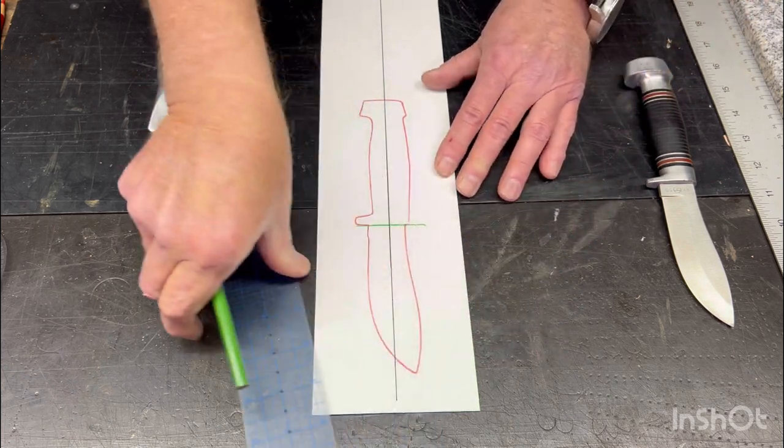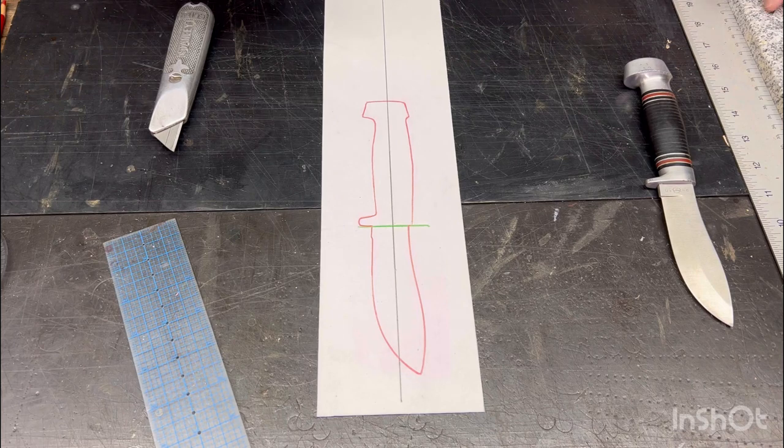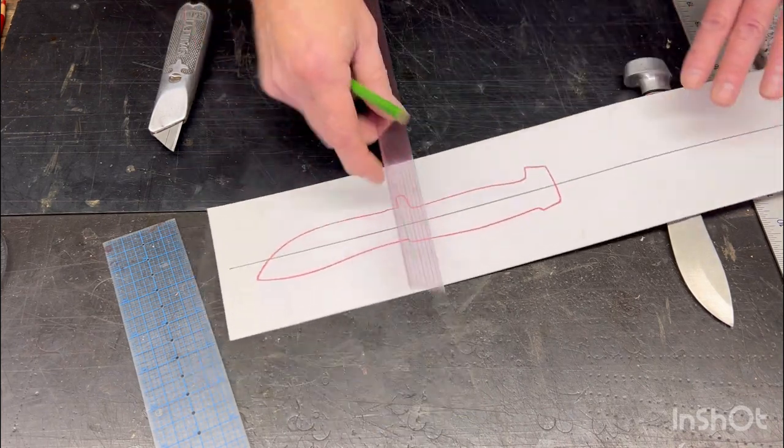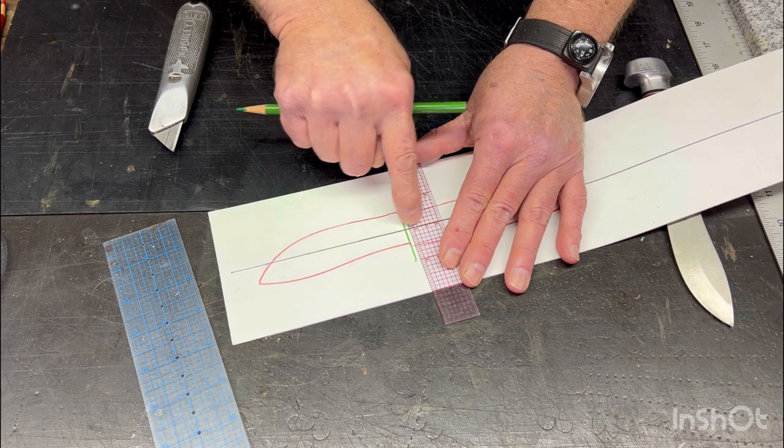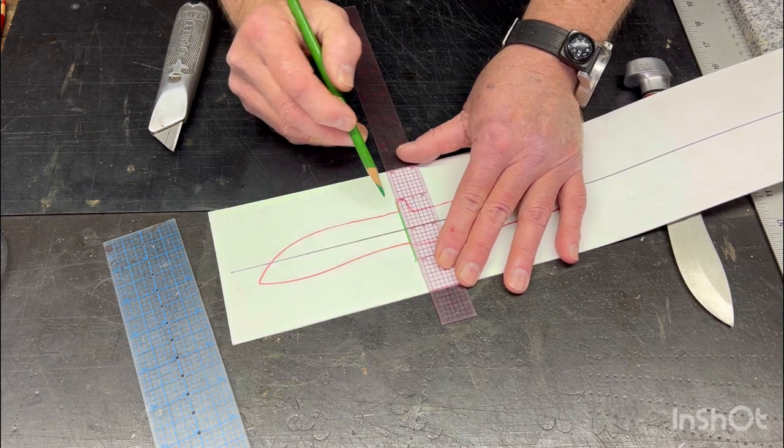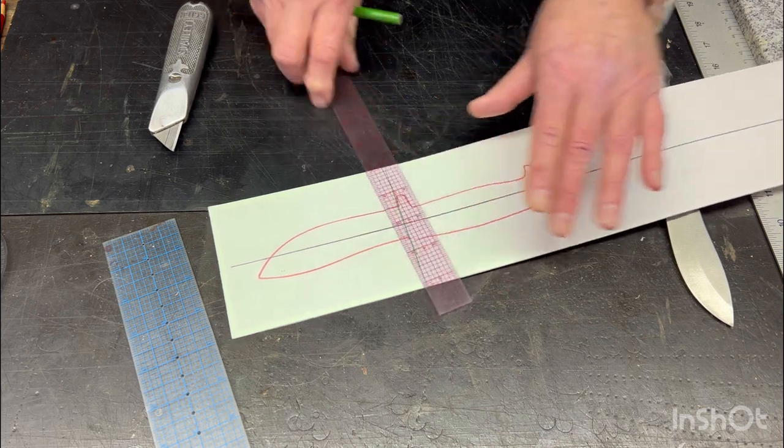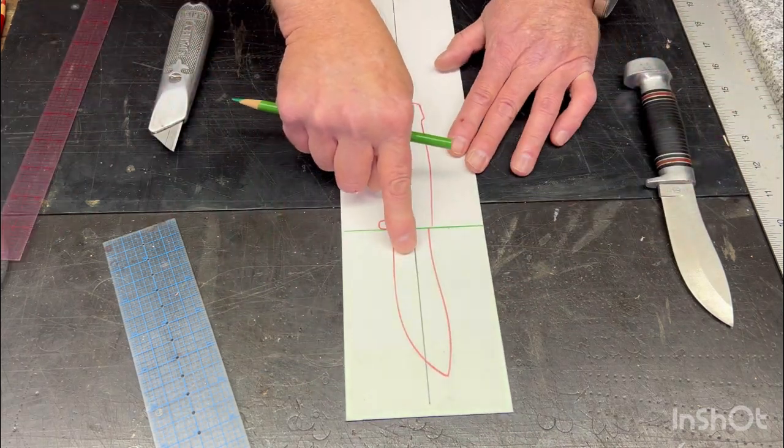Again green will represent the actual sheath pattern itself. So I'm just going to extend this but I'm always keeping the lines on the center line to keep them true. That represents the top of your sheath.